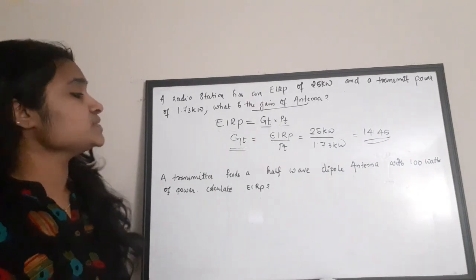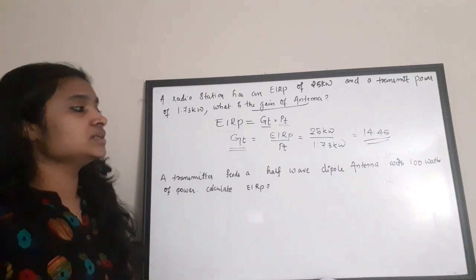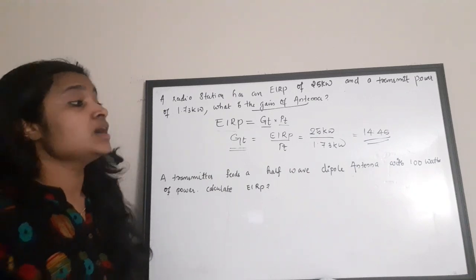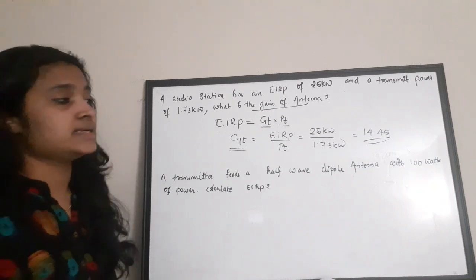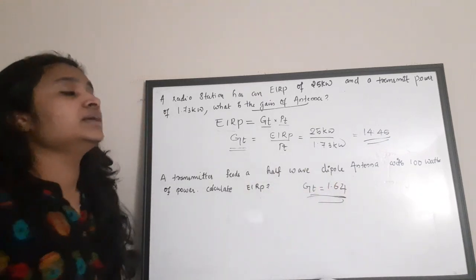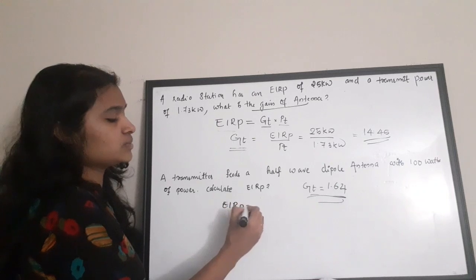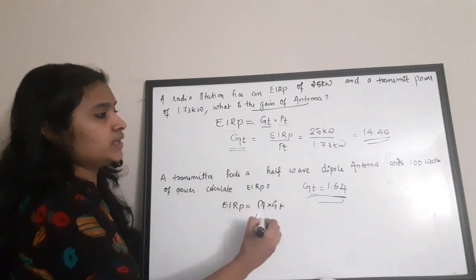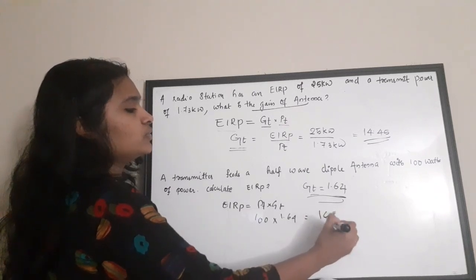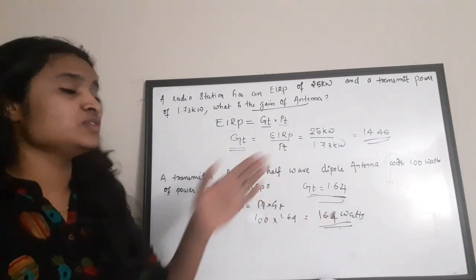Next question: a transmitter feeds a half-wave dipole antenna with 100 watts of power — calculate EIRP. The transmitter power is given but the antenna gain is not explicitly stated. You should know that for a dipole antenna the gain is a constant value: 1.64. Using EIRP = Pt × Gt = 100 × 1.64, the EIRP is 164 watts.